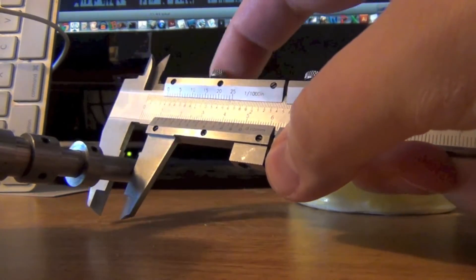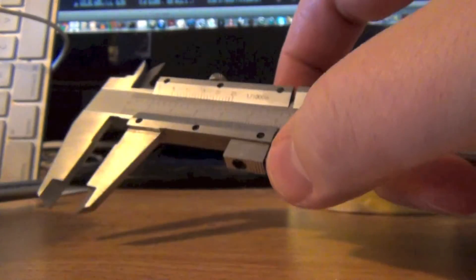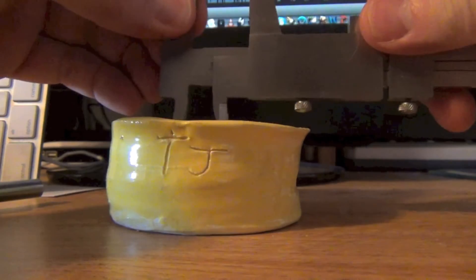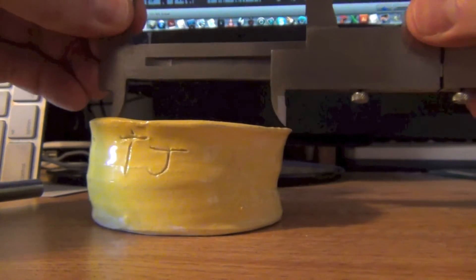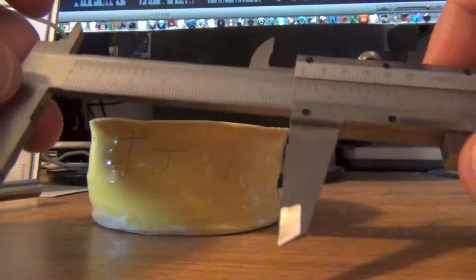Remember to tighten the thumb screw and remove your object when you're actually reading the measurement. It can measure the inside of an object using the upper caliper portion.